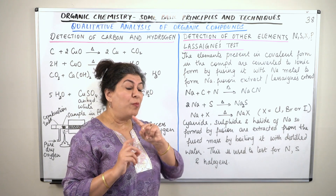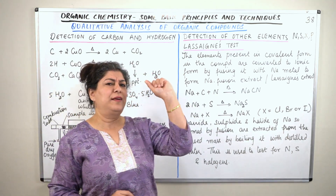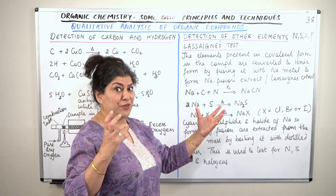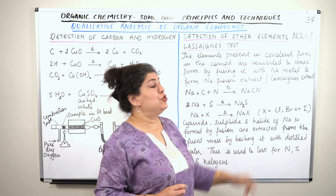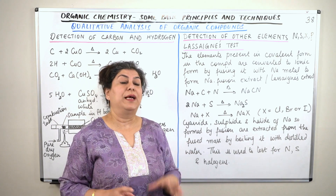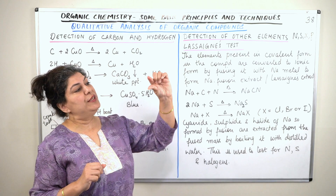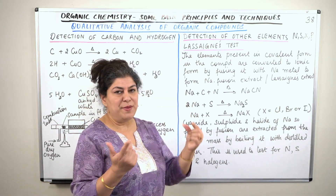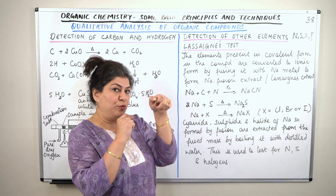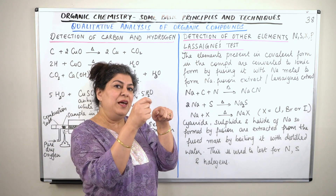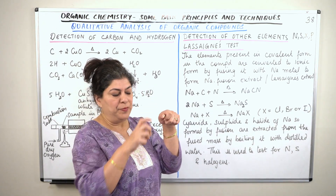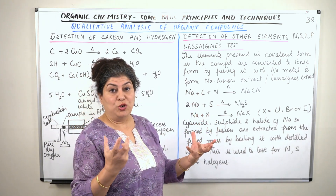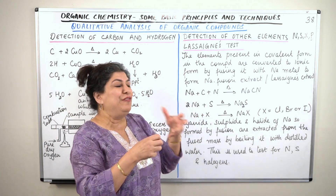Since this is a covalent compound, covalent reactions are slow and unclear, whereas ionic reactions are quick and clear. So we use sodium, the most reactive alkali metal, which is highly electropositive. Nitrogen, sulfur, and halogens are electronegative elements. We fuse the compound with a small piece of sodium metal in a small fusion tube, heating it with a flame. Sodium catches the flame quickly, and the compound reacts and fuses with the sodium.